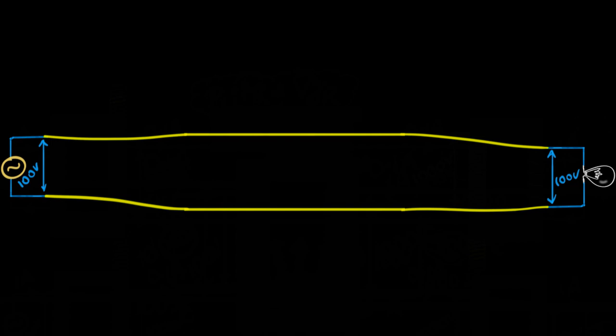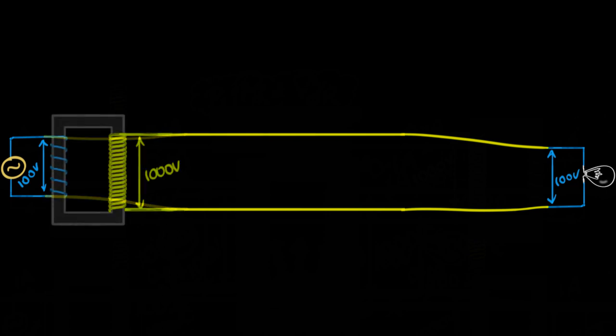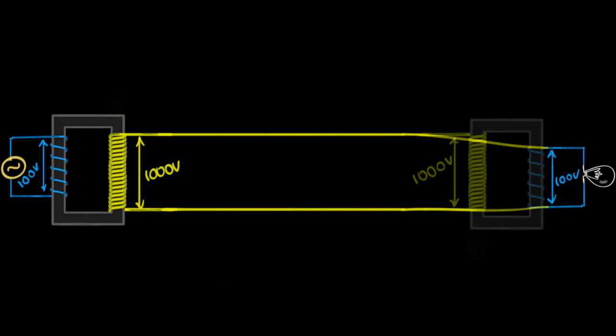But that's not what we do in real life. Instead at the power station we use a transformer and step up that voltage, let's say by ten times to make it a thousand volts, and then near our house we use another transformer to step that voltage back down to whatever we need. How does this make any sense? Why do we do that?